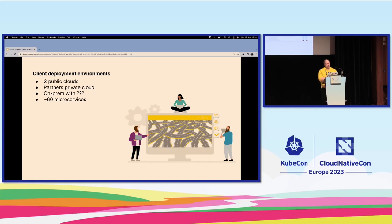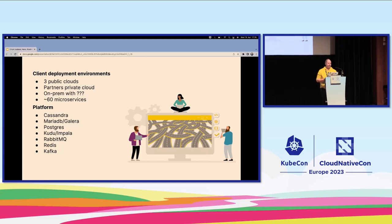We had about 60 microservices, already on Mesos Marathon so they were containerized. Our data platform was on Cassandra, MariaDB with Galera, Postgres, Kudu, Impala, RabbitMQ, Redis, and of course Kafka. We decided to use Kubernetes — it worked. We used various operators and controllers, got things running, and decided to use Istio for ingress. Then we realized we'd like to have all of our data secure in transit because this was sensitive information.